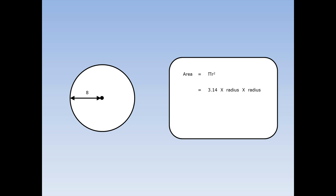Pi is 3.14 and r squared means the radius times the radius. The radius is 8, so this is 3.14 times 8 times 8. And this is equal to 200.96 centimetres squared because it is area.